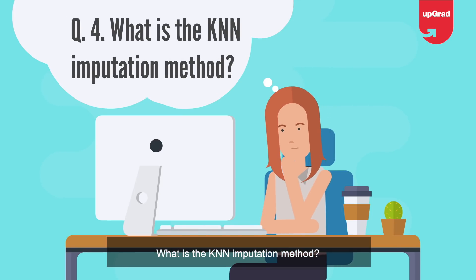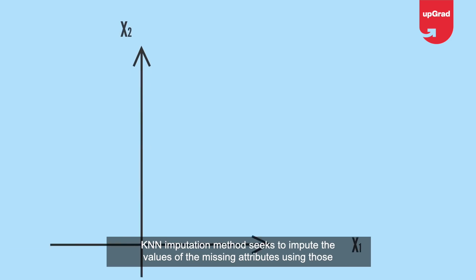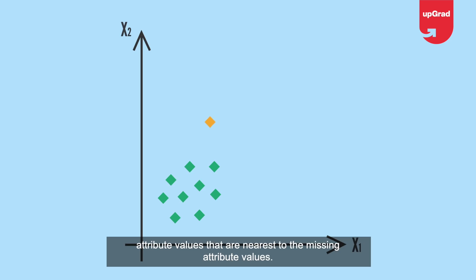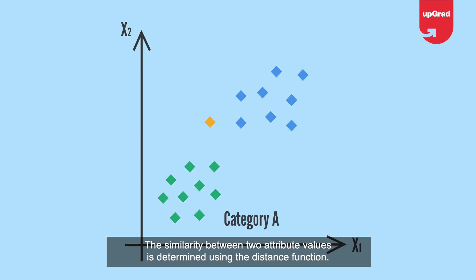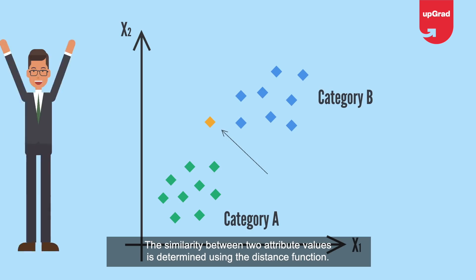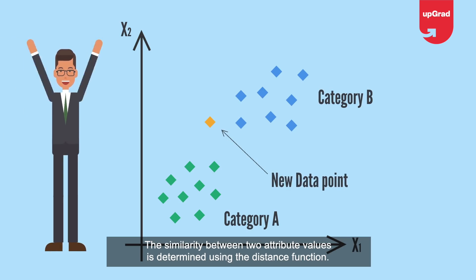What is the KNN imputation method? The KNN imputation method seeks to impute the values of the missing attributes using those attribute values that are nearest to the missing attribute values. The similarity between two attribute values is determined using the distance function.